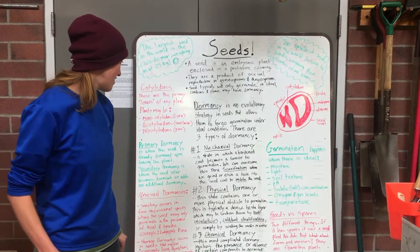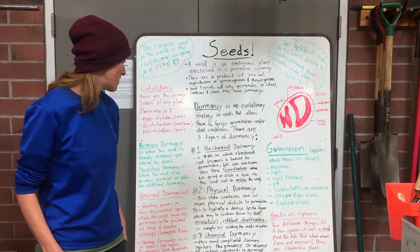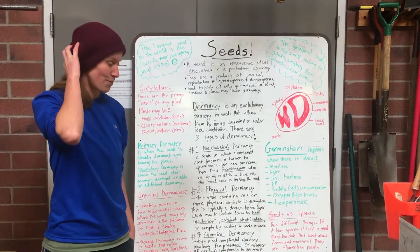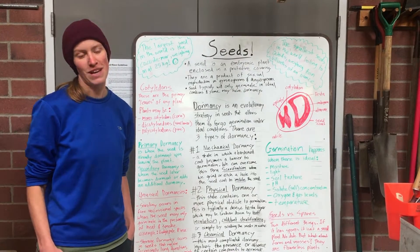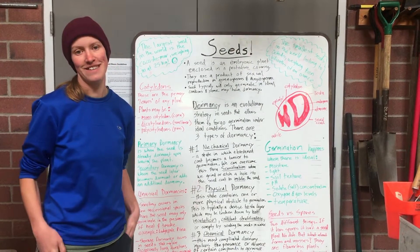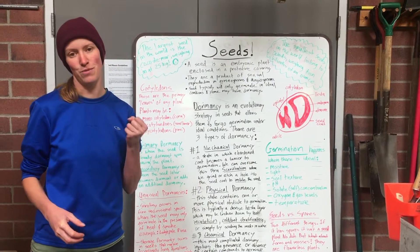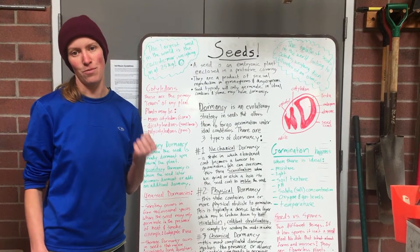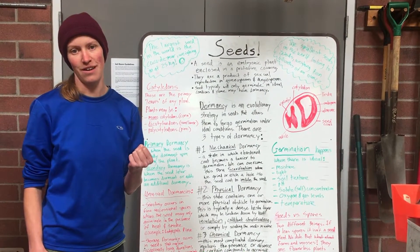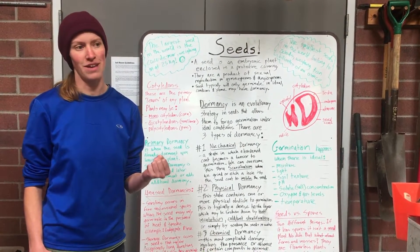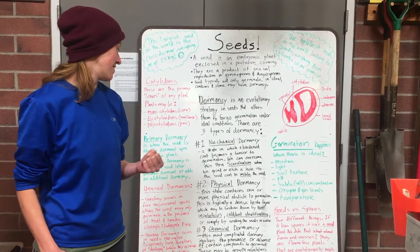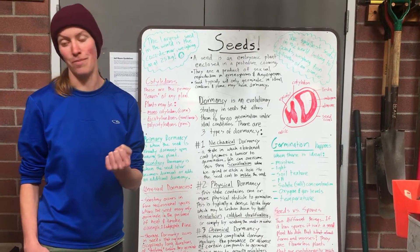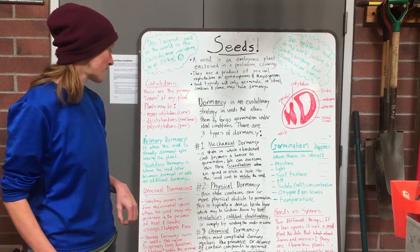In dormancy there are three different varieties. Mechanical dormancy is when a seed develops a really hard coat so that it can withstand the weathering of time and climate action until the perfect opportunity to germinate, perhaps years down the line.